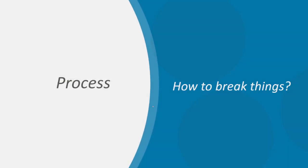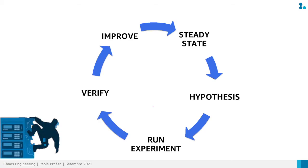So let's see the process of Chaos Engineering — how to break things. Chaos Engineering is based on a full circle of steps: first we define the steady state, then we formulate the hypothesis, then we run the experiment, and then we verify the experiment and improve our system and improve the steady state.